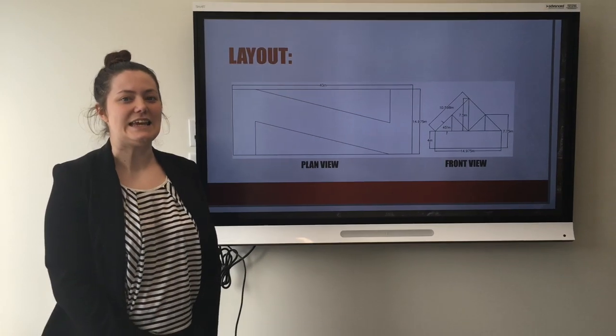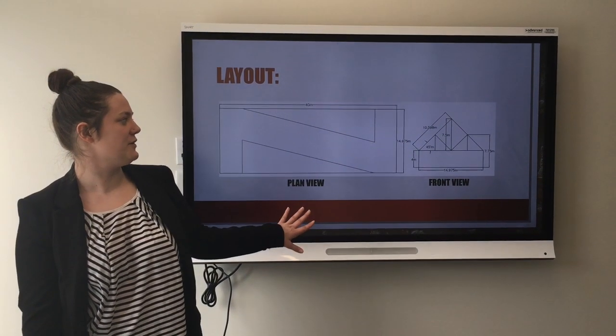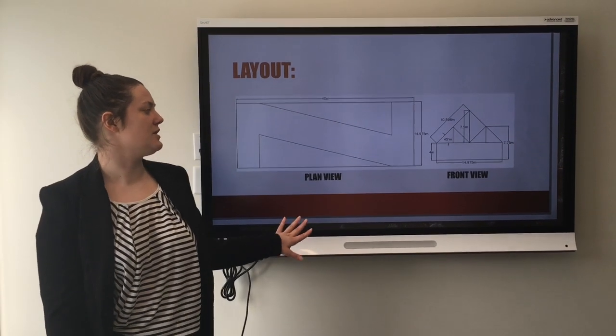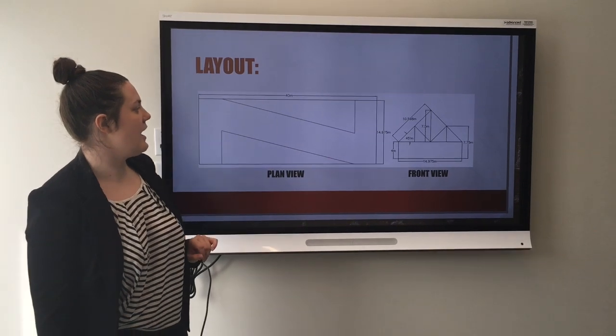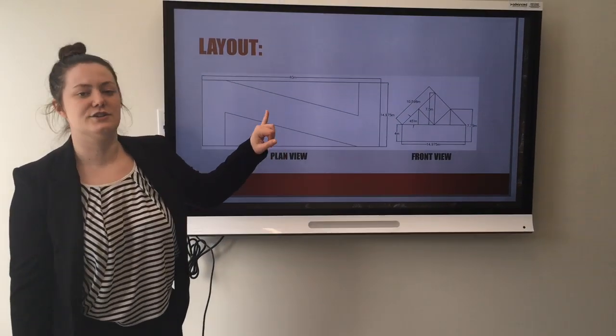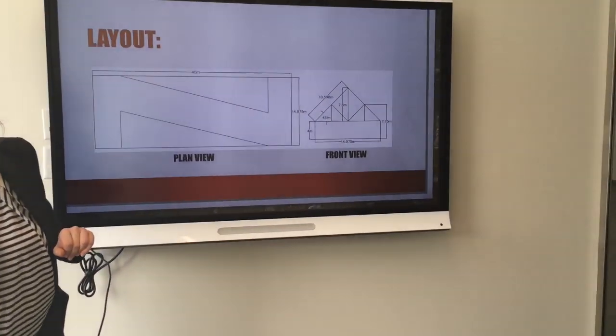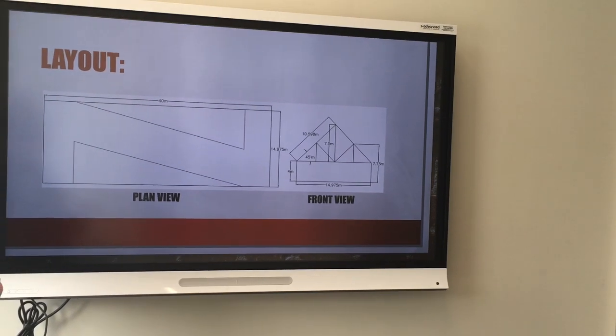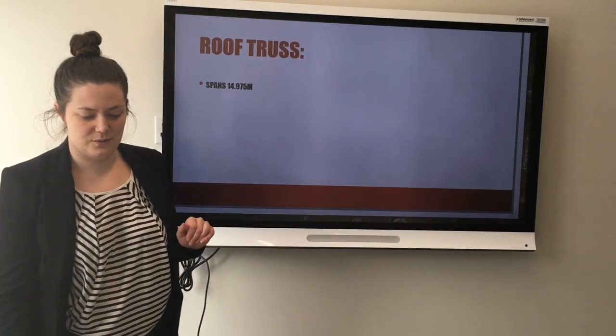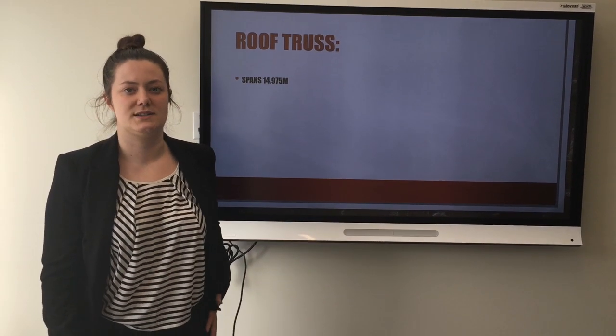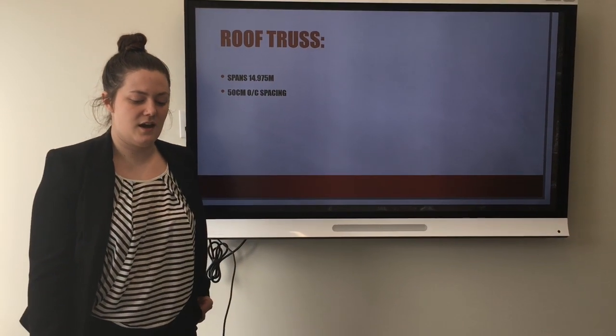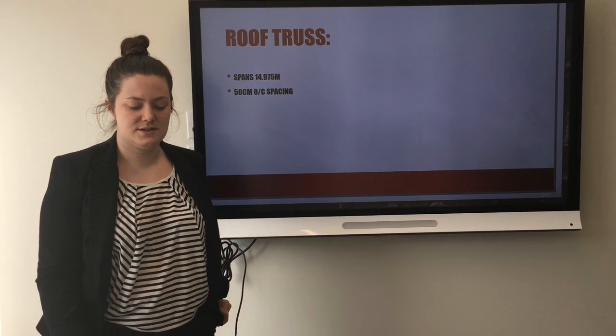This is the layout, a plan view and front view of the building. As you can see, the roofing is held by a truss, and at each of the exterior joints there is a purlin to hold up the supports for the roof. The truss itself spans 14.975 meters, they sit 50 centimeters on center.